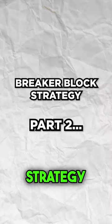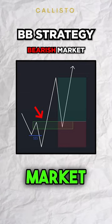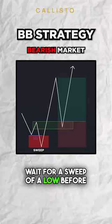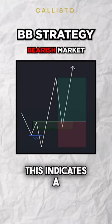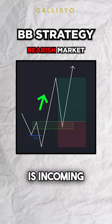Part 2 of the Breaker Block Strategy. Similarly, in a bearish market, wait for a sweep of a low before price impulses up. This indicates a bullish reversal is incoming.